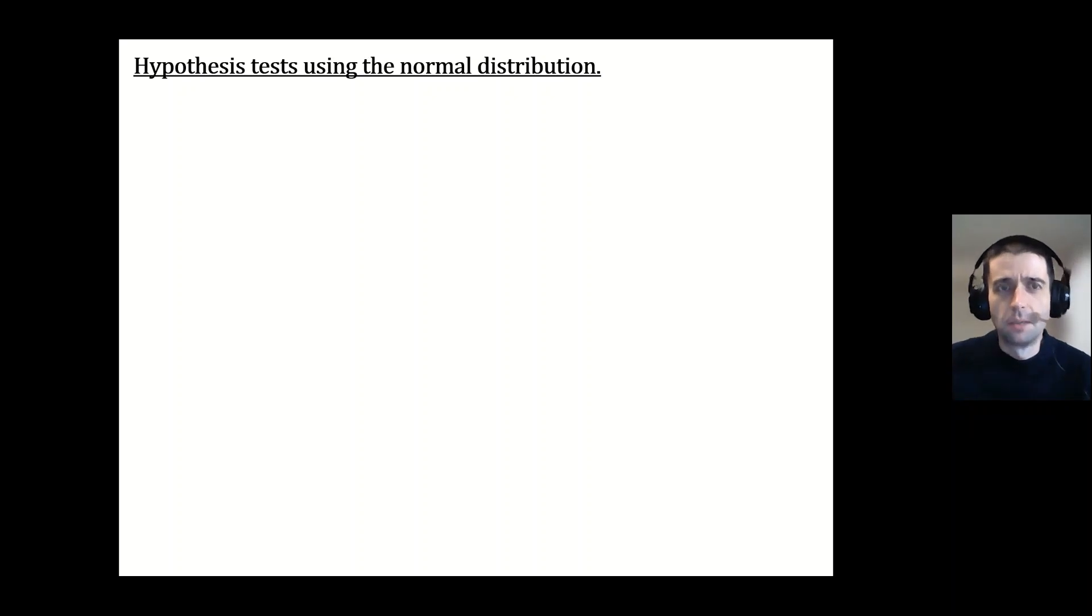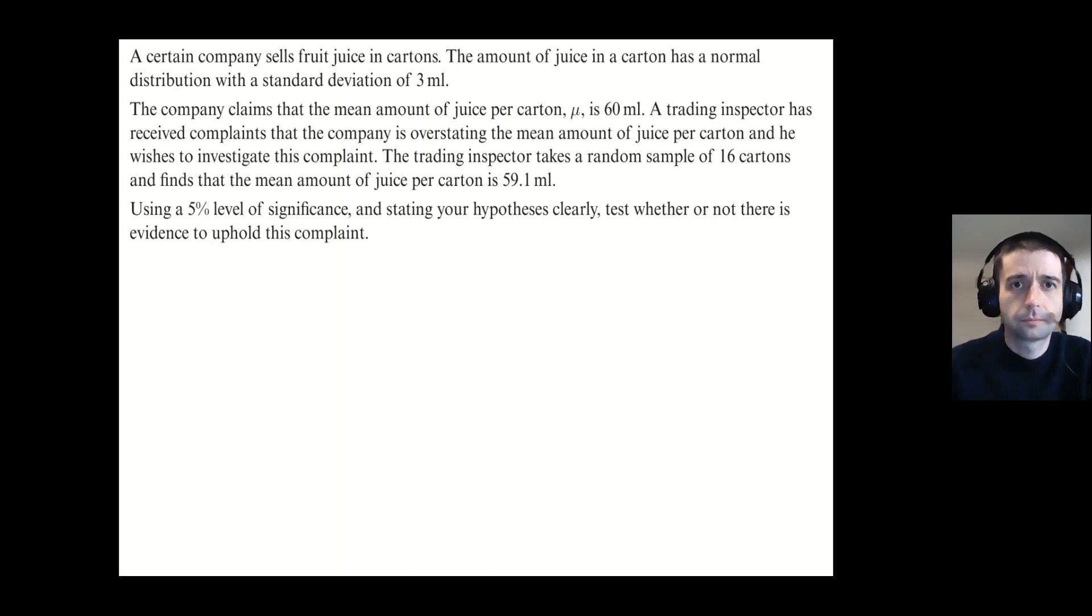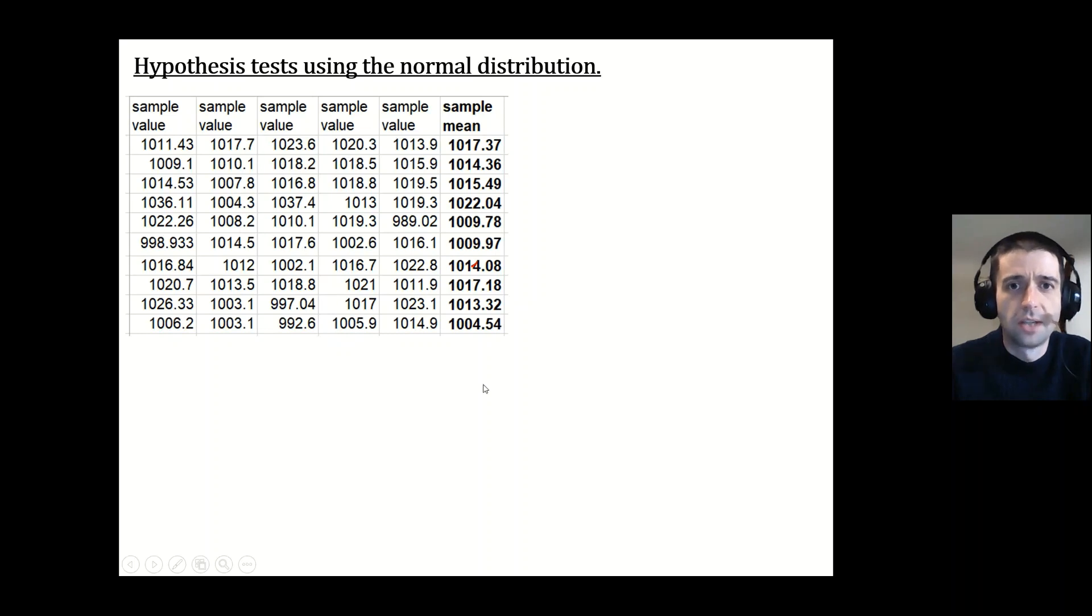In this first video, I'm going to be doing a little bit of theory and then an example of how to do a hypothesis test using a sample taken from a normal distribution. When we're doing hypothesis tests on the normal distribution, it is all about taking a sample. We're going to be taking samples from a population that is normally distributed and working with that. So starting off with some data here that I've got some samples that I've done from the Edexcel large data set.